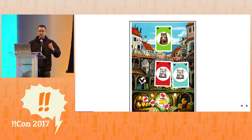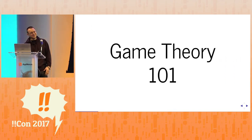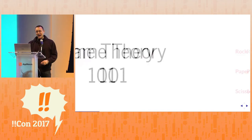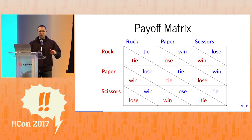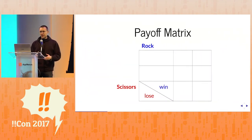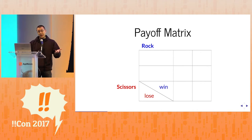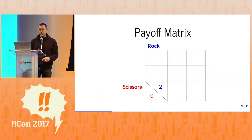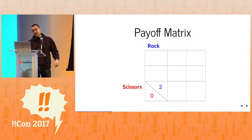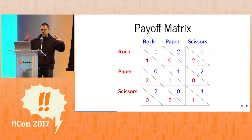So now we have to discuss game theory, which is how we're going to solve this. You've probably all played rock, paper, scissors. Let's break this down: the column player has played rock, and the row player has played scissors, and the rock player wins and the scissors player loses. Since game theory is a branch of mathematics, we use numbers instead of win and lose — a win is one, a loss is zero, and a tie is one. This is the whole matrix with the numbers in it.